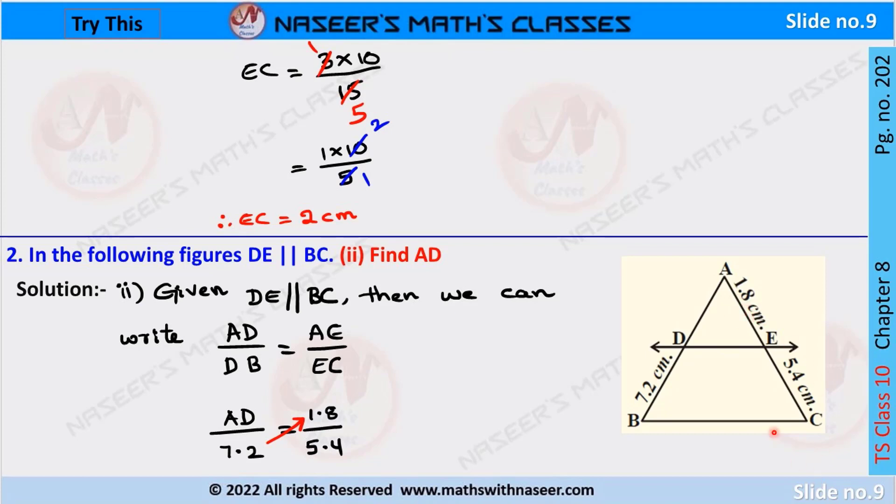Given values: AE = 1.8 centimeters and EC = 5.4 centimeters. We have to find the value of AD. Since DE is parallel to BC, the ratio of the corresponding sides are equal, so we can write AD/DB = AE/EC. Now we substitute the values: AD/7.2 = 1.8/5.4.